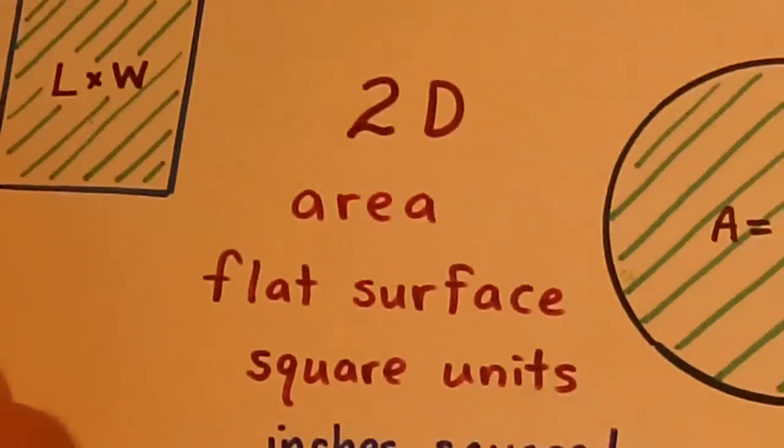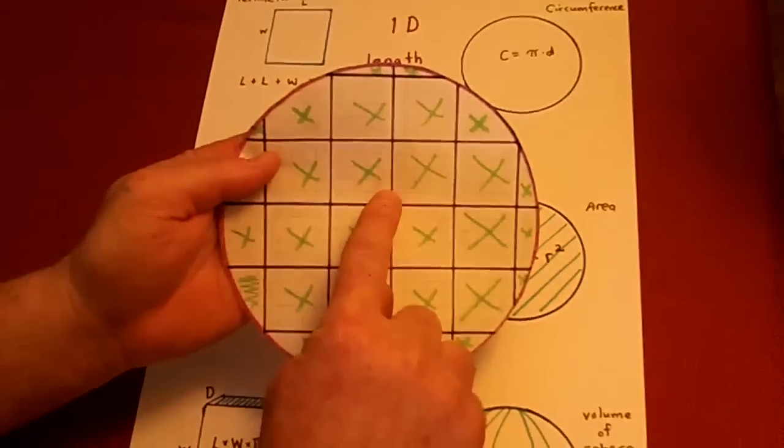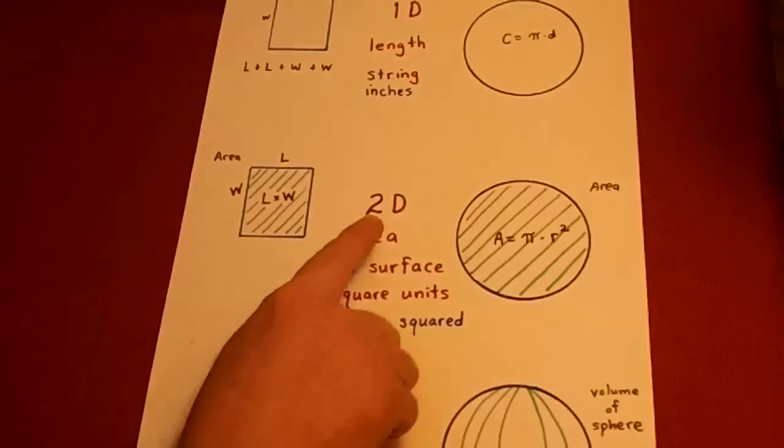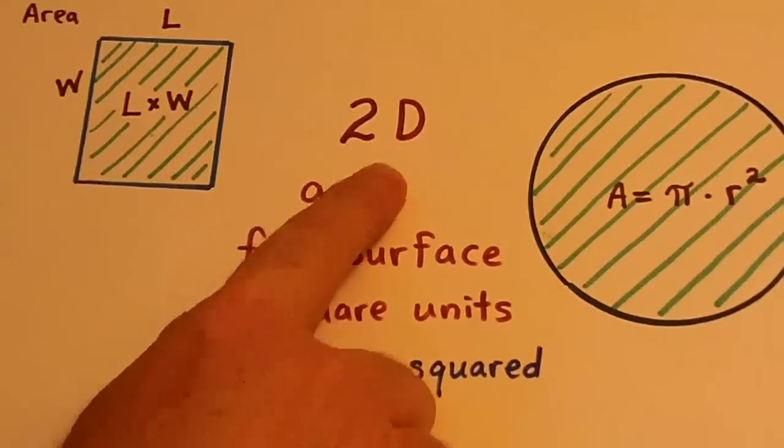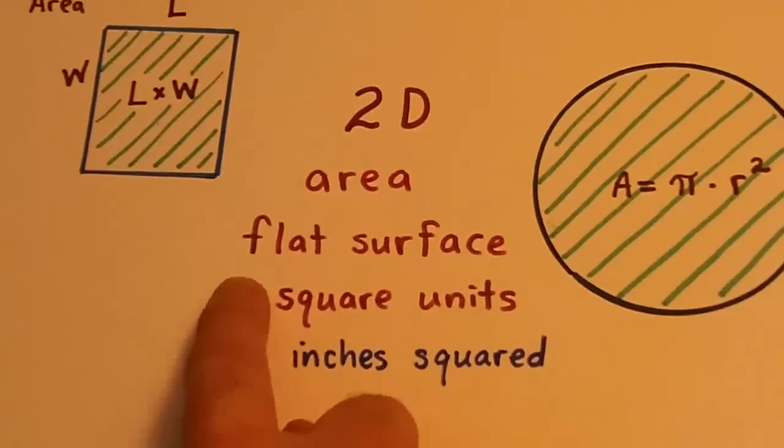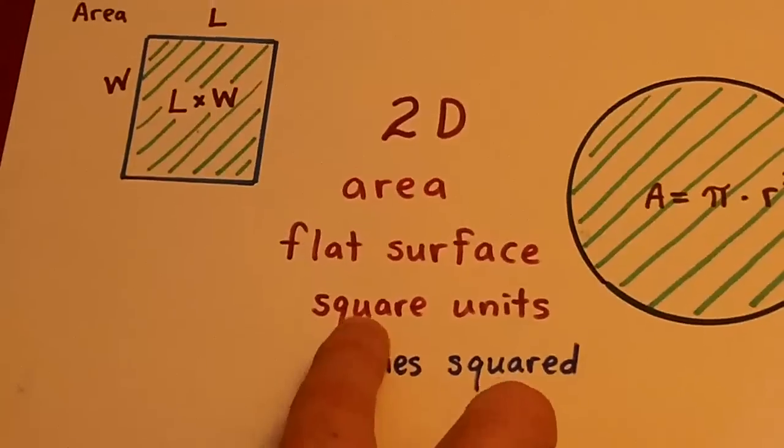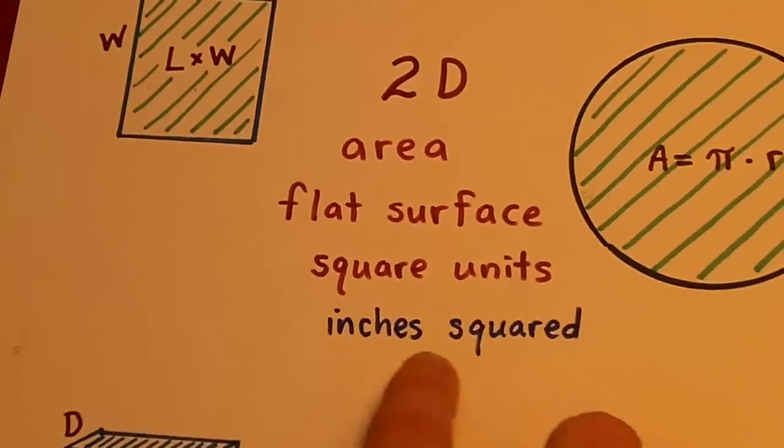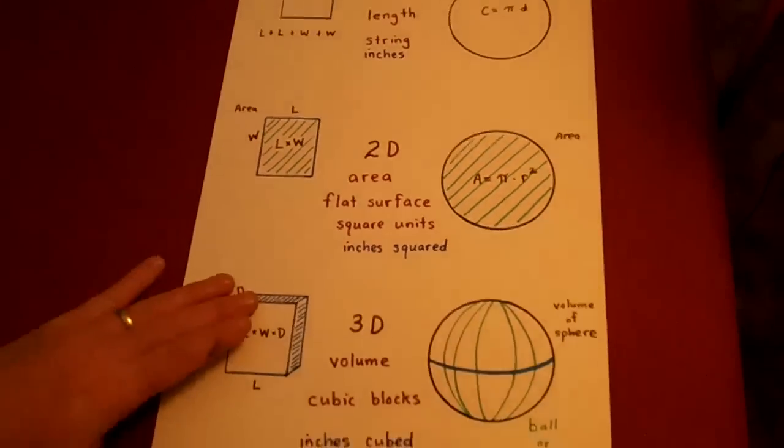And remember in the circle, remember our square blocks here? Length times width. So those are the two dimensions, length times width. That's called area. We measure it on a flat surface. It's measured in square units or inches squared or centimeters squared.